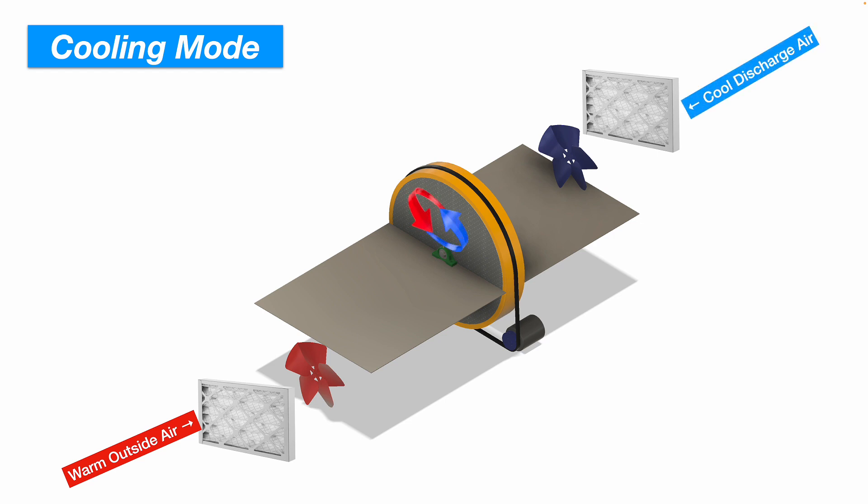And that warm air inside the energy recovery wheel is going to give off some of its heat energy to the cool discharge air that is exiting the building.